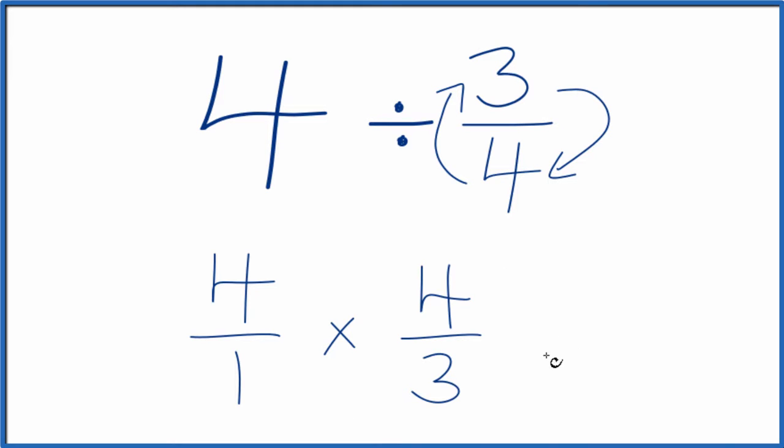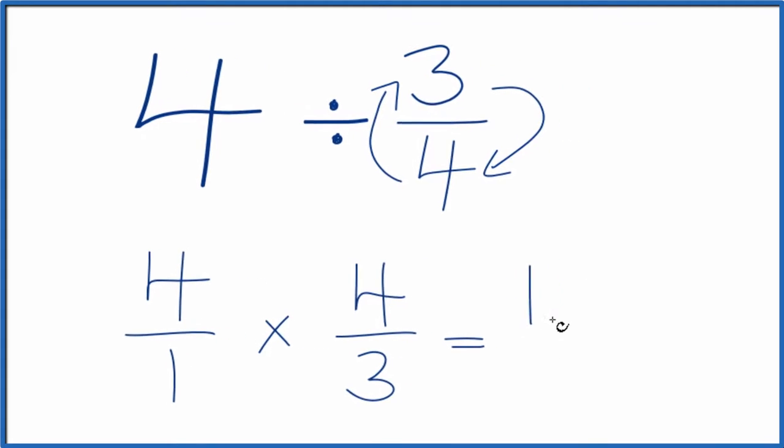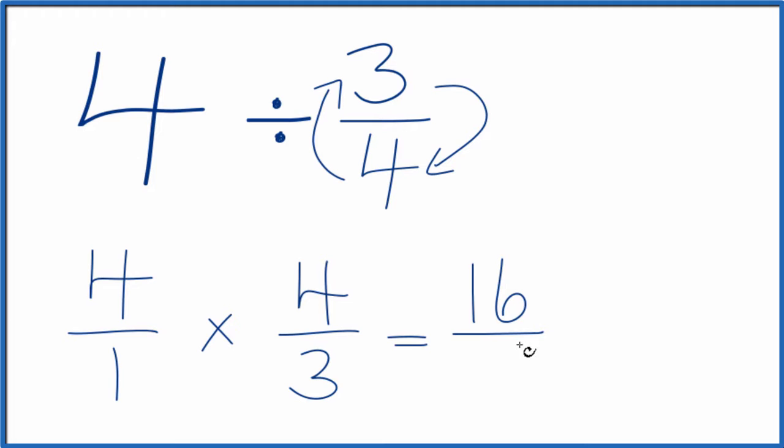When we multiply fractions, we multiply the numerators and then the denominators. That gives us our answer. So 4 times 4 is 16, 1 times 3 is 3. So when we divide 4 by 3 fourths, we get 16 thirds.